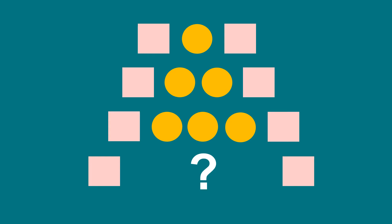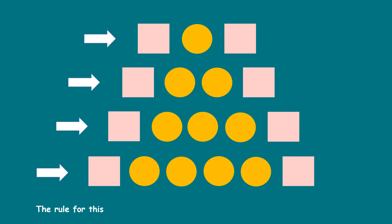Now let's look at this pattern and try to complete it. Every line has yellow circles between the two pink squares. The first line has one yellow circle between the pink squares. Second line has two yellow circles. Third line has three yellow circles. So how many yellow circles will be there in the fourth line? Yes, four. Good job. The fourth line has four yellow circles between the pink squares. The rule for this pattern is that the yellow circles increase by one in each line.